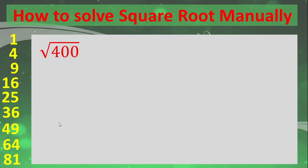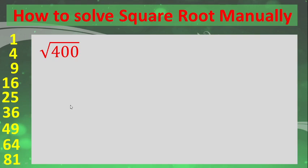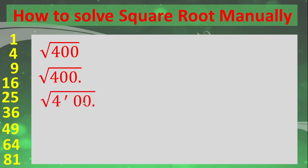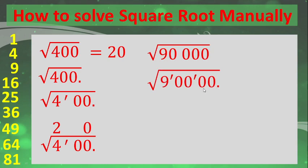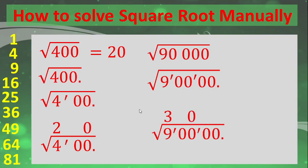Let's first solve square roots of numbers with zeros. For example, the square root of 400: group by twos from the decimal point — separate the two zeros and the four. The square root of 4 is 2, and the square root of 00 is 0, therefore the square root of 400 is 20. Same case with 90,000: group by twos to get 9, 00, 00. The square root of 9 is 3, so the square root of 90,000 is 300.